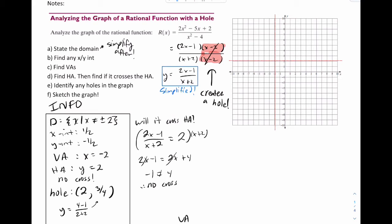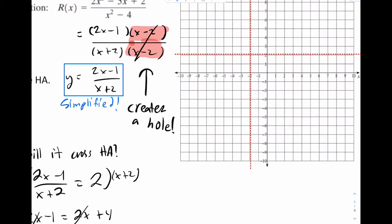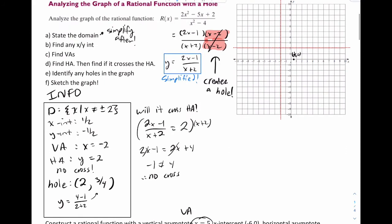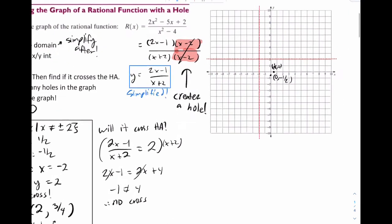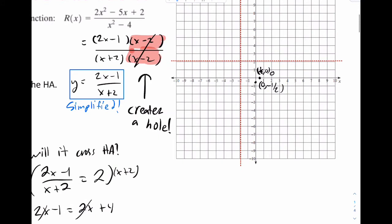And then we have an x intercept of one half. So I'll mark that right here. That's one half comma zero. And I have a y intercept of negative one half. So I'll put zero comma negative one half. And we have a hole at 2 comma 3 over 4. So we'll put that right there, and that's 2, 3 fourths.